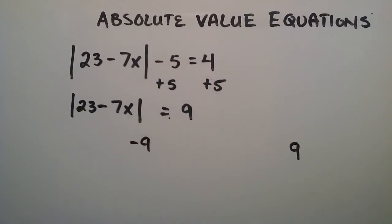So from that we can basically create two solutions. Since we know that whatever is in here has to be positive 9 or negative 9 to make this true, and we know we have this in there, well then this has to equal either positive or negative 9.